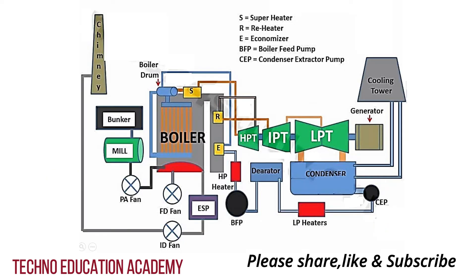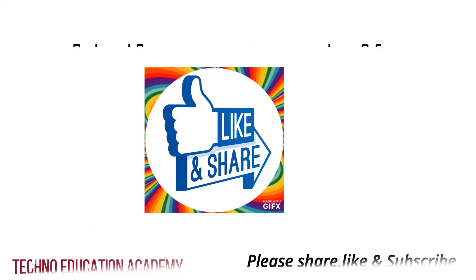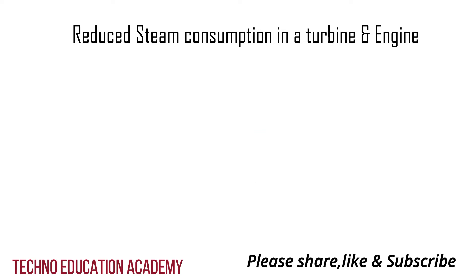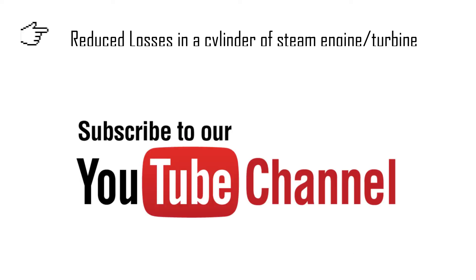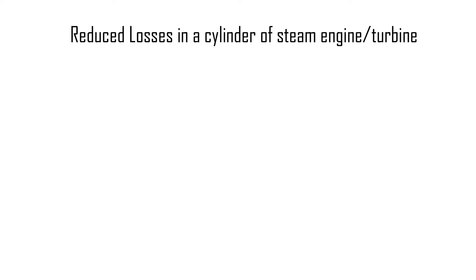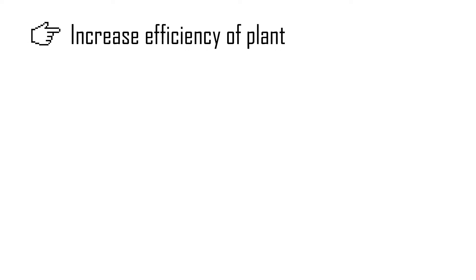Small boilers are not provided with a superheater. The following are the advantages of superheated steam: first, steam consumption of a turbine or engine is reduced; second, losses due to condensation in the cylinder of a steam engine and the steam pipes are reduced; third, erosion of the turbine blades is also eliminated; and fourth, the efficiency of the steam plant is increased by using superheated steam.